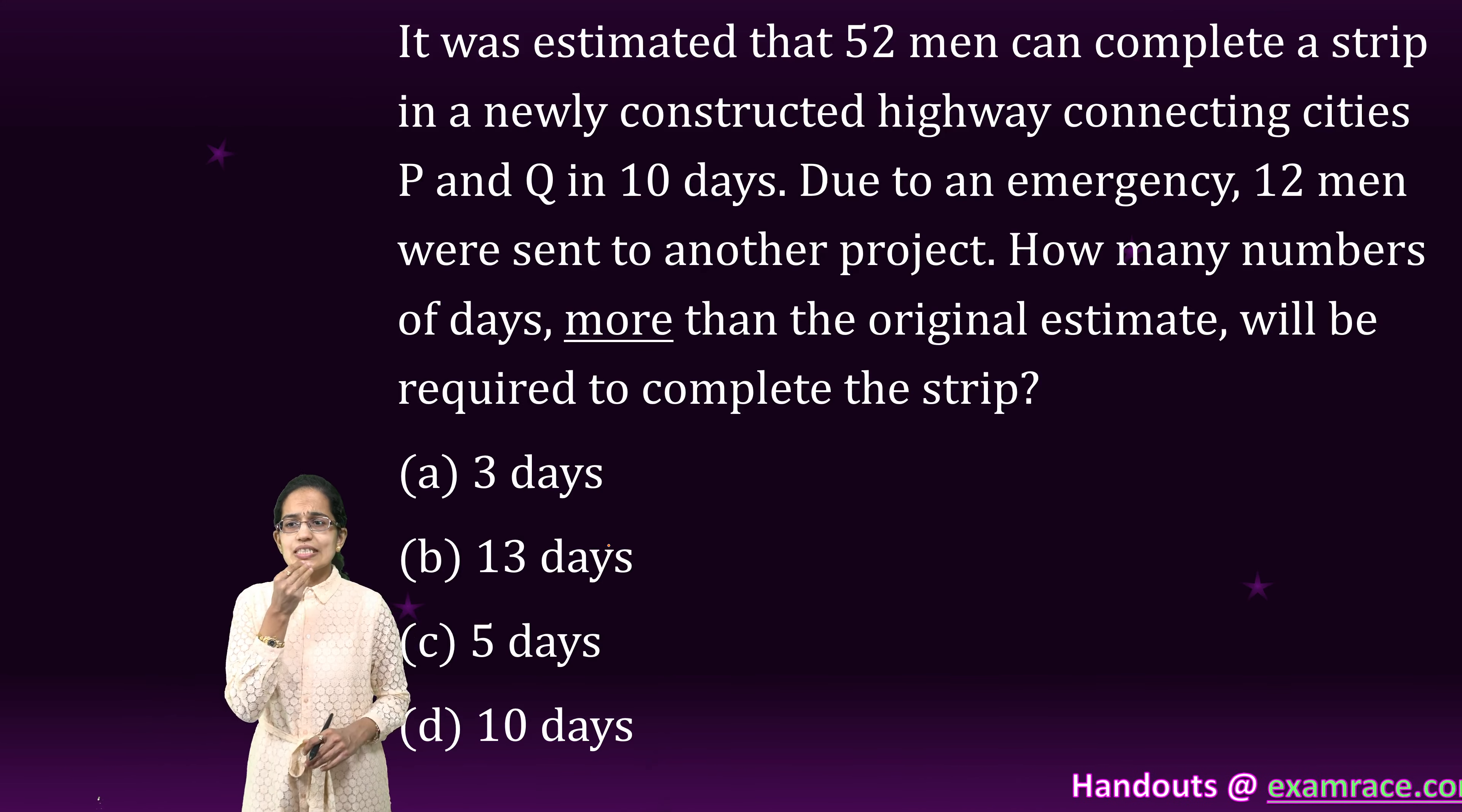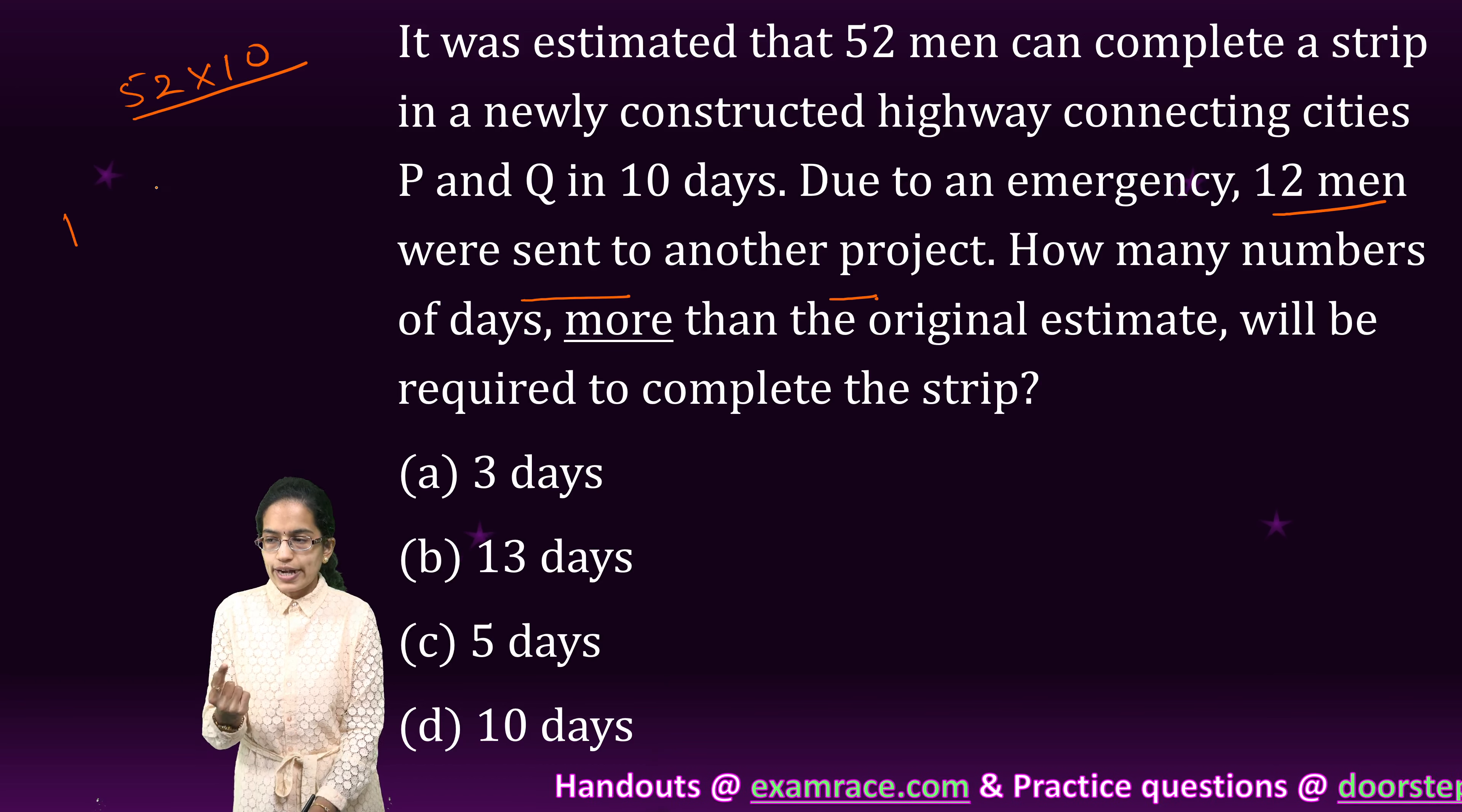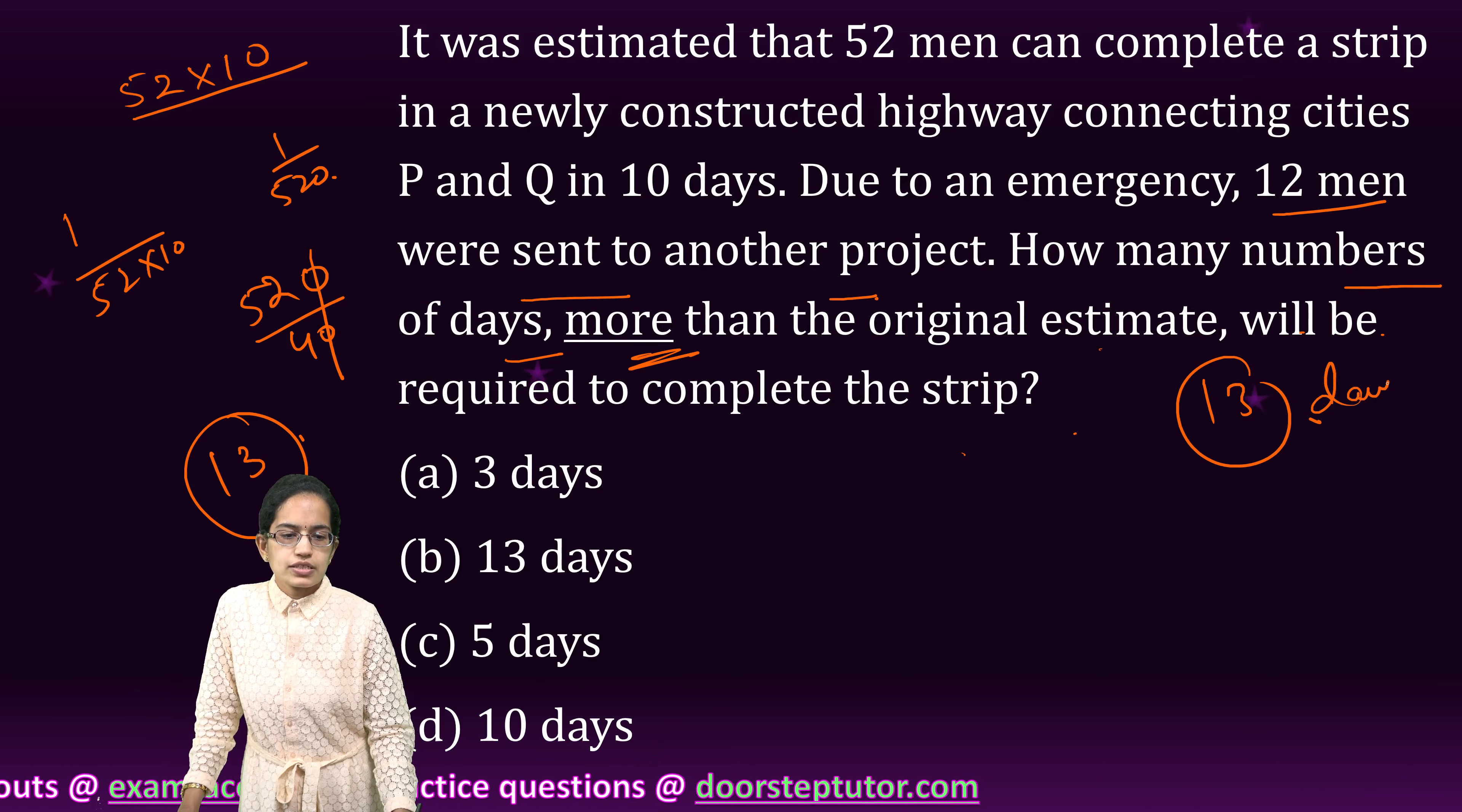The next is: it is estimated that 52 men can complete a work in 10 days. So one work would be done by how many days? So 52 into 10 would be 1 person 1 day work. Now, due to an emergency, 12 men were sent to another project. So if I want to calculate the work done by 1 person in 1 day, it would be 1 by 52 into 10, that is 1 by 520. Now 12 persons went in an emergency. So how many left? 40. So I simply do 520 divided by 40. So this gives me 13. But my answer is not here over.